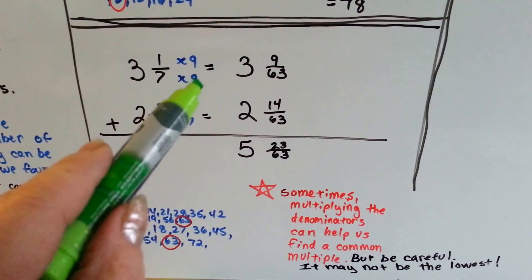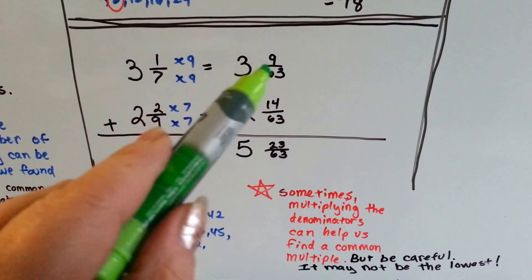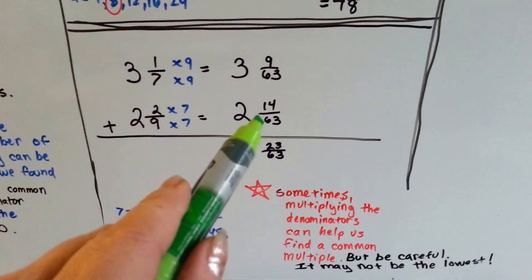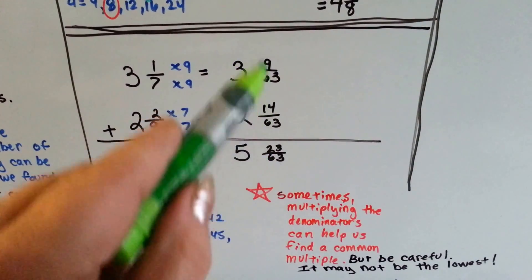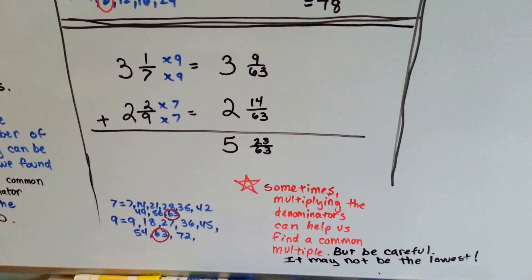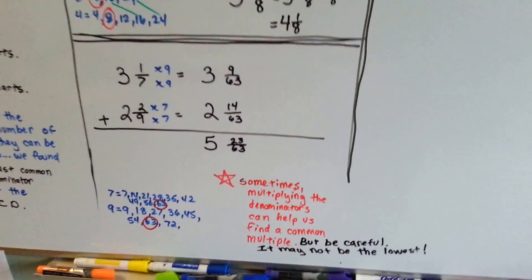So seven gets multiplied by nine, the numerator's jealous and gets multiplied by nine also. Nine gets multiplied by seven, the numerator gets multiplied by seven also. We add the numerators and get twenty-three sixty-thirds. We add the whole numbers, and we have five and twenty-three sixty-thirds.